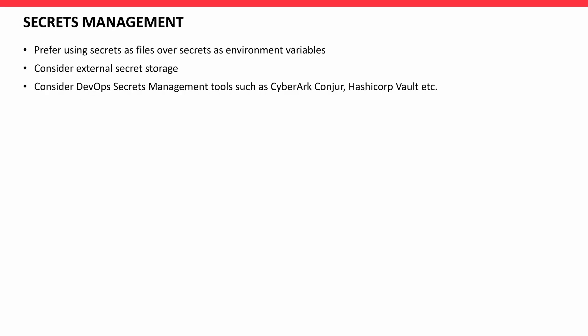Secrets management: Prefer using secrets as files over secrets as environment variables. It's a good practice to have secrets as files because environment variables can spread in many places. Consider external secret storage — it's a good idea to have a NAS mount or a SAN mount to store secrets if you use them locally. Consider DevOps secret management tools such as CyberArk Conjur and HashiCorp Vault. They store the secrets in the repository and distribute them on a need basis.